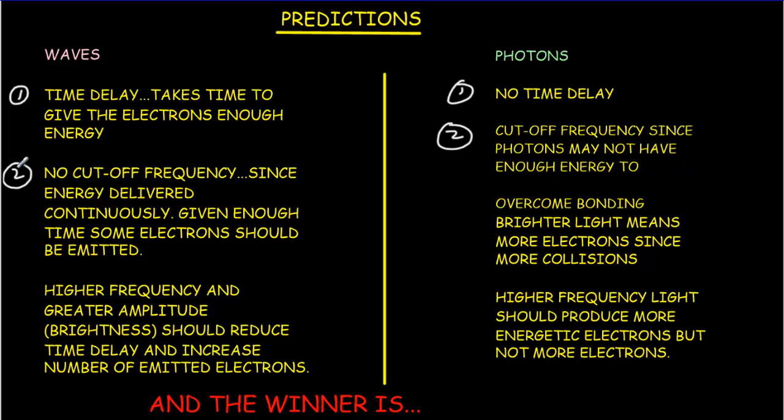The second difference is about a cutoff frequency. In the wave model, there isn't a cutoff frequency — using a lower frequency will probably take more time to transfer energy, but eventually you should be able to emit electrons at pretty much any frequency. Very different in the photon model: if the photon doesn't have enough energy to overcome the bonding energy of the electron to the metal, you're not going to get any electrons at all. So a very critical difference is cutoff frequency versus no cutoff frequency.